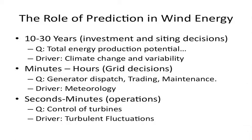On the time scales of minutes to hours or days, you have issues of grid management, how you dispatch your generation mix, trading of energy, and how you take things offline for maintenance. That's driven by typical meteorology as storms pass through over minutes to hours. From seconds to minutes, there are decisions about more automated turbine control — how you control the pitch of the blades. These need lead time forecasts of seconds to minutes, driven by turbulent fluctuations.